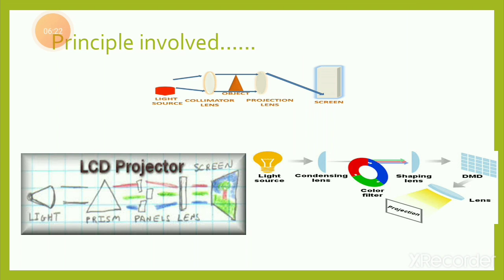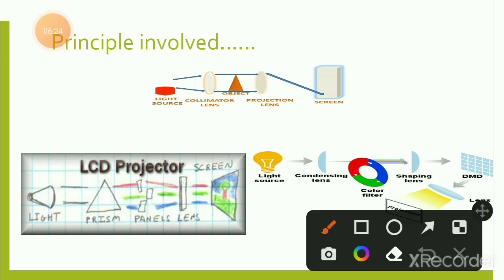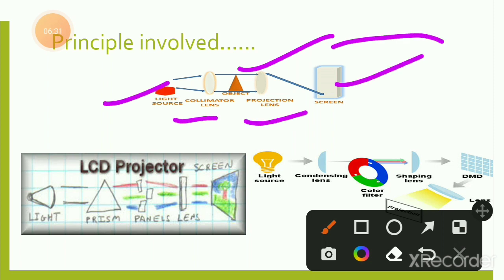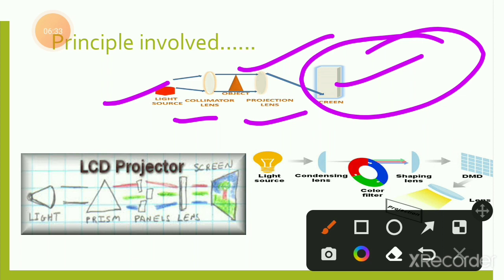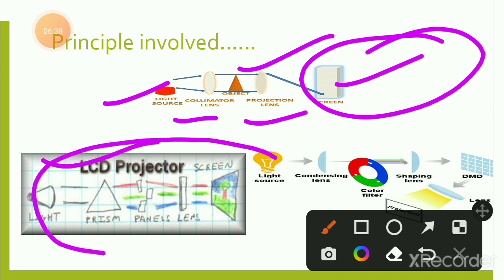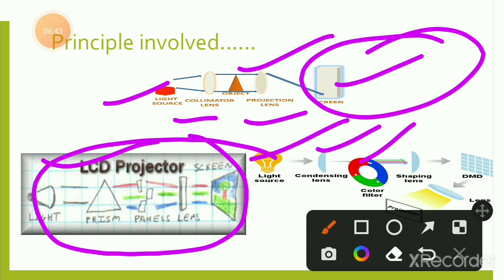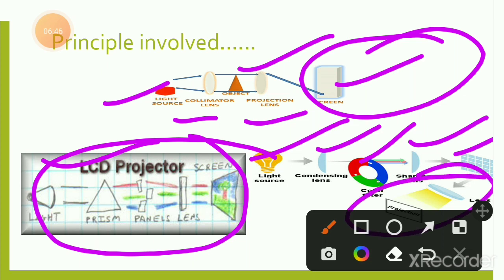The basic principle of projection involves: object, light source, condenser lens, projection lane, and screen where the object is displayed. In an LCD projector, the components include light, panels, lens, condensing lens, color filter (for filtering color), shaping lens, and DMD (Digital Micromirror Device), where projection takes place.